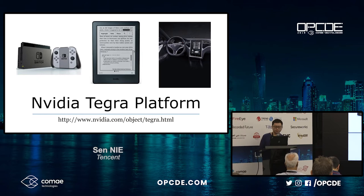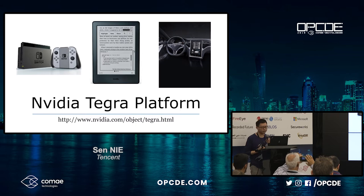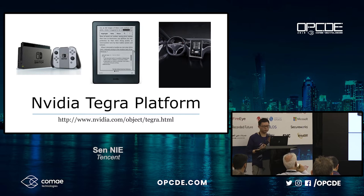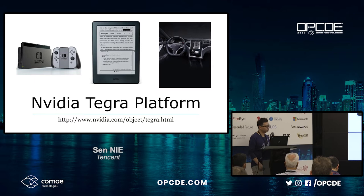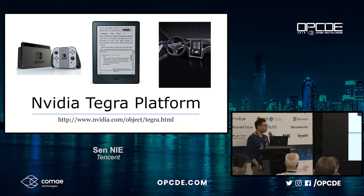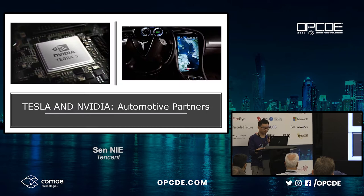What is the NVIDIA Tegra platform? Tegra is NVIDIA's embedded Linux development platform used in many types of devices such as smartphones, game consoles, and automotive systems. It is widely used in embedded systems. Three famous products include the Nintendo Switch, the Kindle e-book reader, and Tesla uses Tegra for its entertainment system. BMW also uses the Tegra platform in their cars.